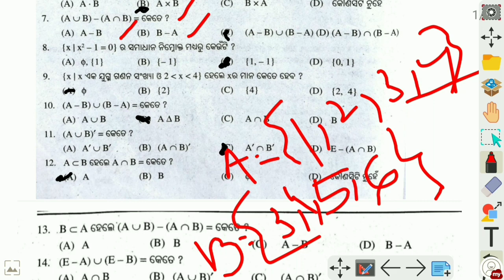A minus B union B minus A. So, A minus B union B minus A gives us the symmetric difference of the two sets.